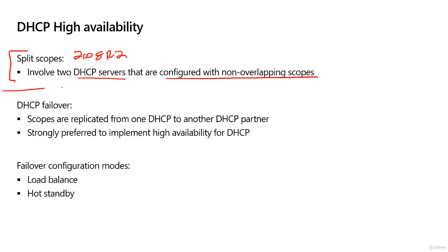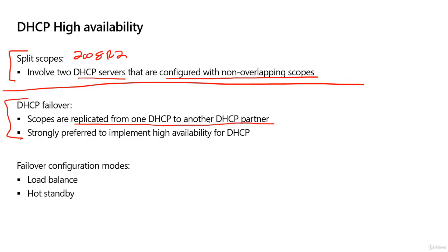The other option — completely separate from split scope — is DHCP failover. With failover, you do not have non-overlapping addresses. Instead, you have one scope and its entire range of addresses is replicated to another DHCP server, so both servers have the exact same scope and lease the same IP addresses. They communicate with each other: server one knows what addresses have been leased by server two and vice versa, replicating an actual DHCP database between the two. This is the preferred solution, introduced in Server 2012.